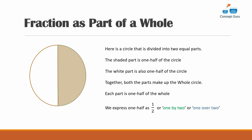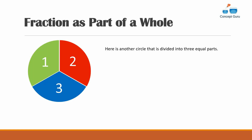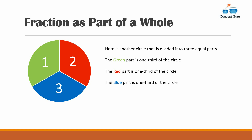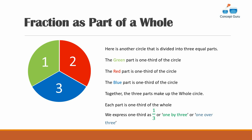Here is another circle divided into three equal parts. The green part is one third of the circle, the red part is one third, and the blue part is also one third. Together the three parts make up the whole circle. Each part is one third of the whole. We express one third as one over three — one by three.